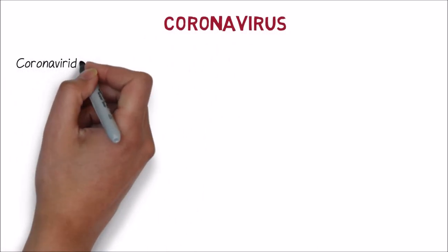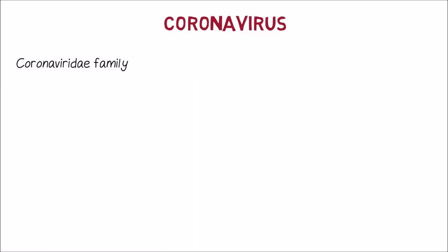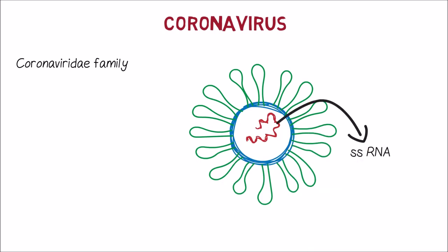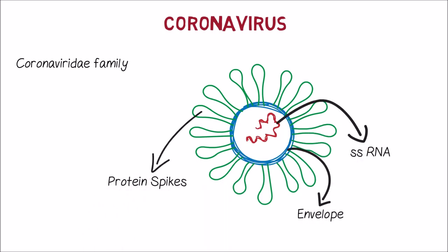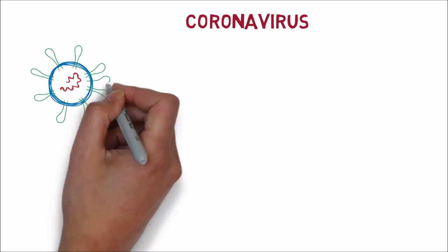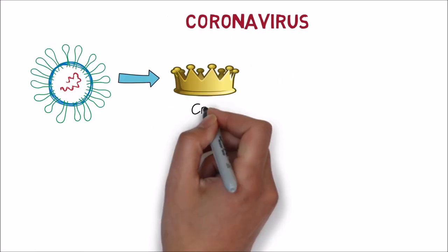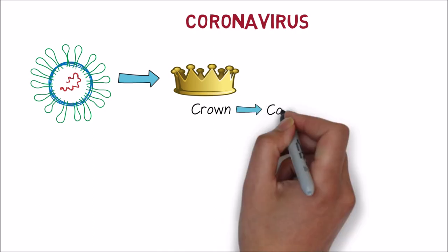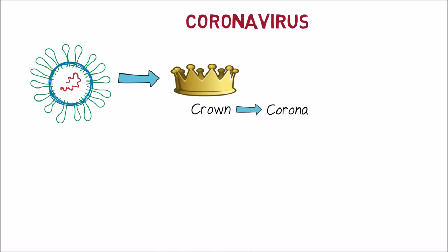Coronavirus is a genus of the Coronaviridae family. These are positive-sense, single-stranded RNA viruses, surrounded by an envelope with protein spikes. This gives the virus an appearance of a crown. Crown in Latin means corona, and thus they are called coronavirus.